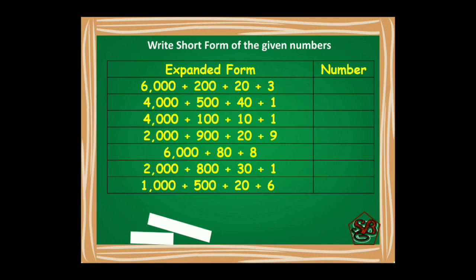Let's make it more clear with some more examples. Here are the expanded forms given to us and we have to write the short form. Digit 6 will go in the thousands place, this 2 in hundreds place, this 2 in tens place and this 3 in ones place. So the number formed will be 6223. The next number is 4000 plus 500 plus 40 plus 1. Here, 4 will go in thousands place, 5 in hundreds place, 4 in tens place and 1 in ones place. So the number is 4541.